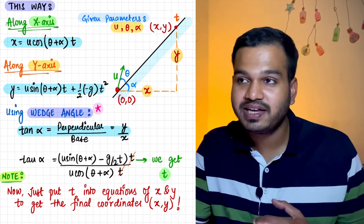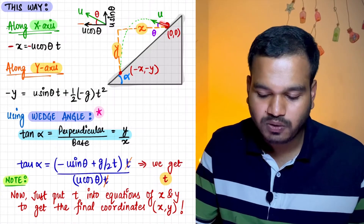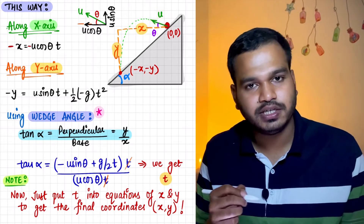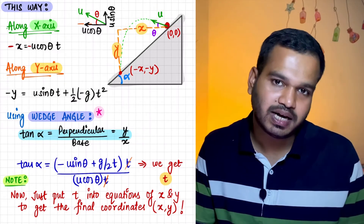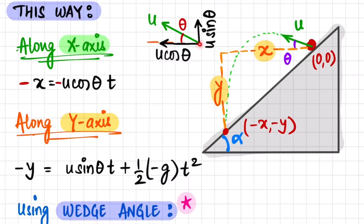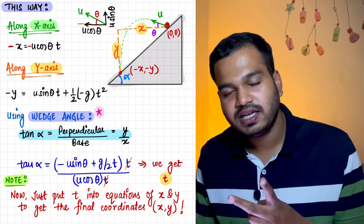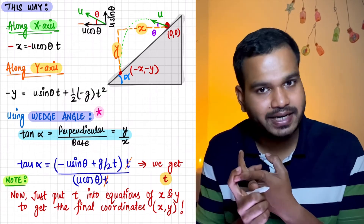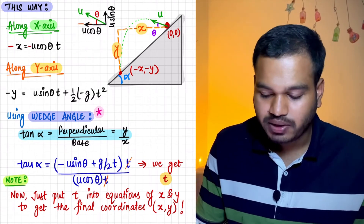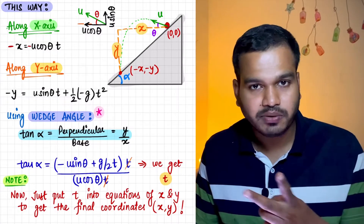Now let's also see the case where the particle is projected from the top of the inclined plane. Suppose a particle is projected from the top of the inclined plane with initial velocity u at angle theta with the horizontal. The first step is the same — resolve initial velocity components: u cos(theta) horizontally and u sin(theta) vertically. Then write displacement equations in x and y directions using the second equation of motion.